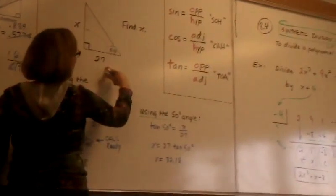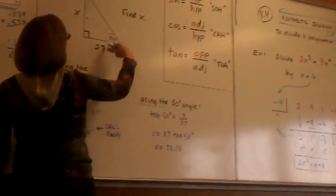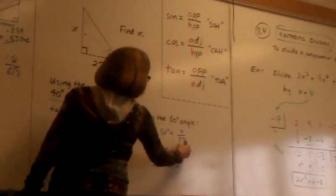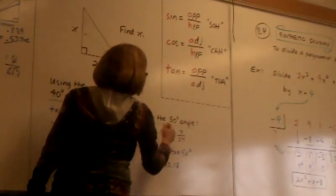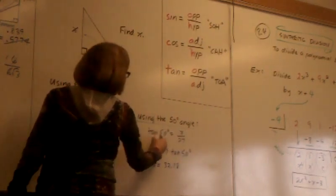Leg opposite me over this leg. So the tangent of 50 is x over 27, solving it out straight. I multiply both sides by 27, so I'll have x equals 27 times the tangent of 50.